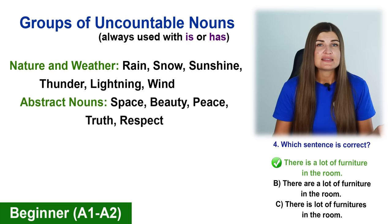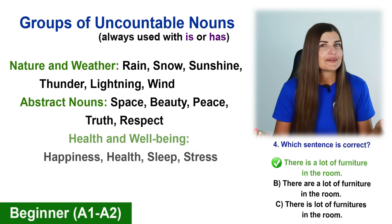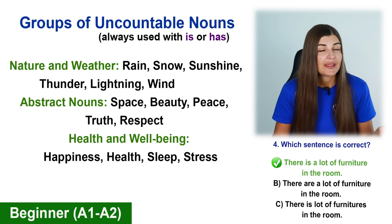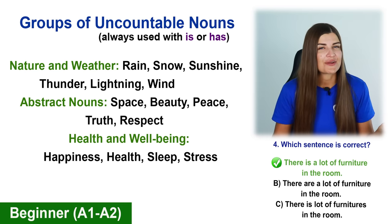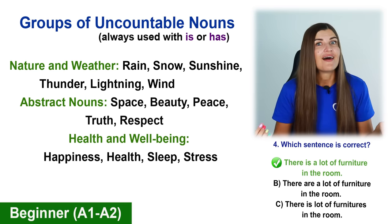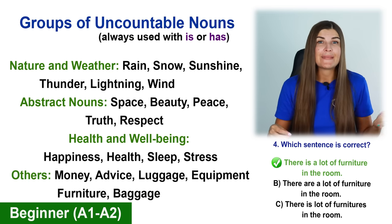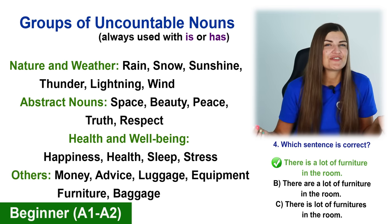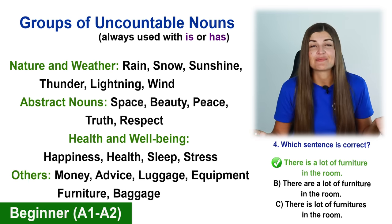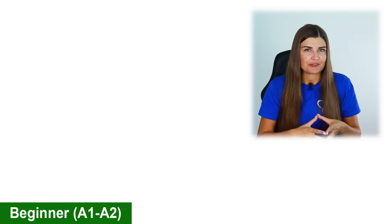Abstract nouns: space, beauty, peace, respect. Health and well-being: happiness, health, sleep, stress, and so on. There are also uncountable nouns like money, advice, luggage, equipment, furniture, and baggage.